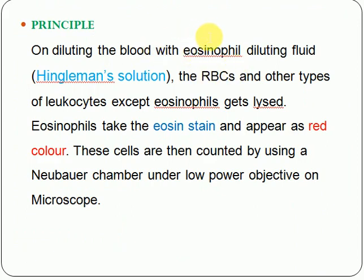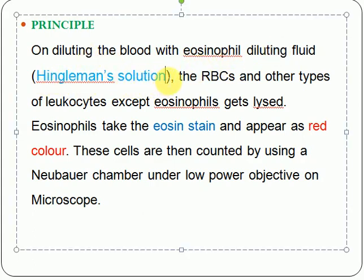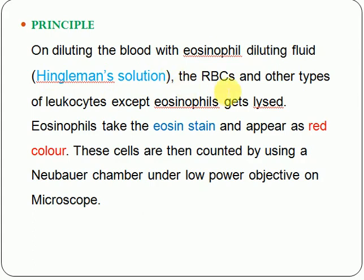Now I am going to talk about the principle of the test. We have to dilute the blood with eosinophil diluting fluid, that is the Hinkelmann solution. After diluting, all other cells — like RBCs, other leukocytes — will be lysed, and only the eosinophils will remain intact. The eosinophils will then take a red color because the diluting fluid contains eosin stain.